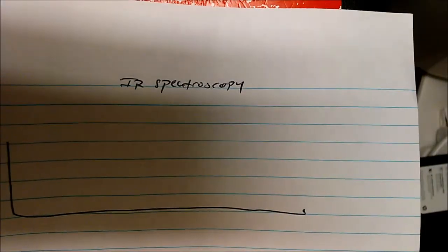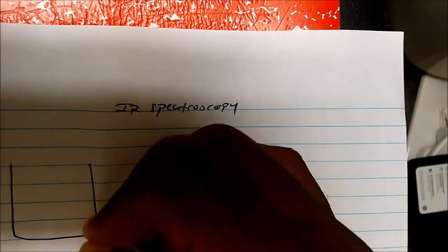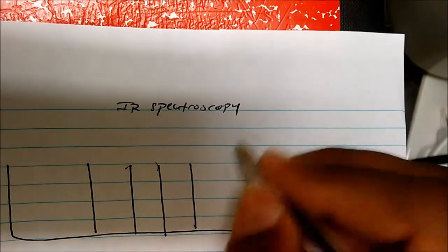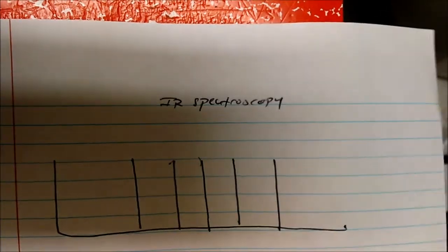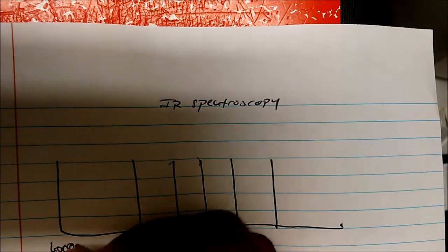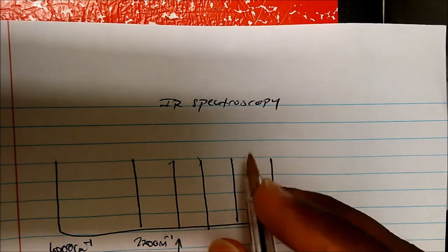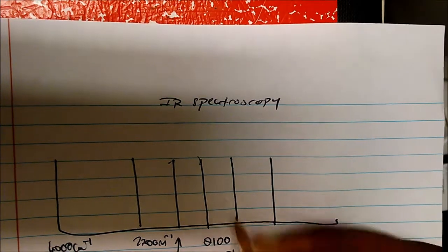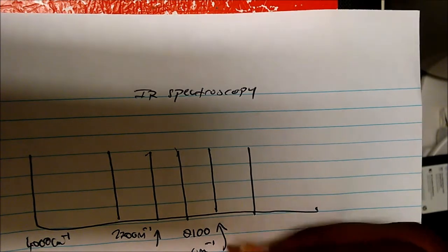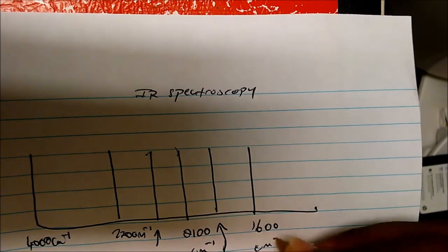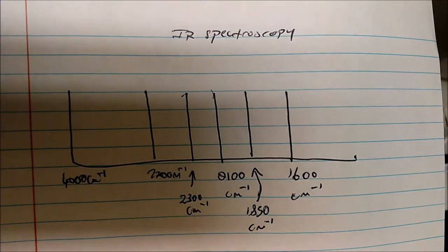So let me draw an IR spectrum here. This is probably not to scale but I want you to get the basic idea. I'll give you some values — this axis is inverse centimeters. So this is what the graph may look like with some numbers labeled, and this is approximately drawn to scale. So you might have an IR spectrum, and this is what the chemical shifts on the bottom look like.